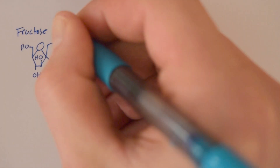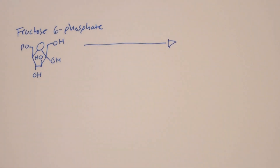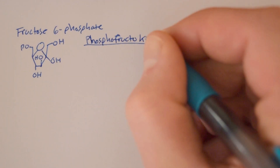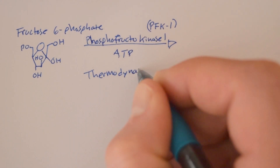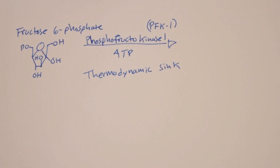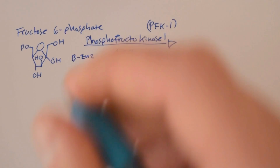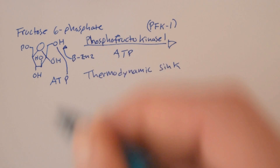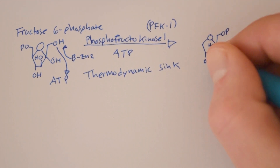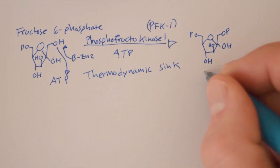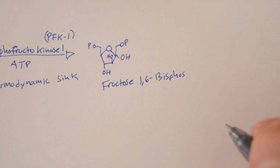The next enzyme is phosphofructokinase 1, along with ATP, and this step is a thermodynamic sink, which means it's not very reversible. This goes to fructose 1,6-bisphosphate.